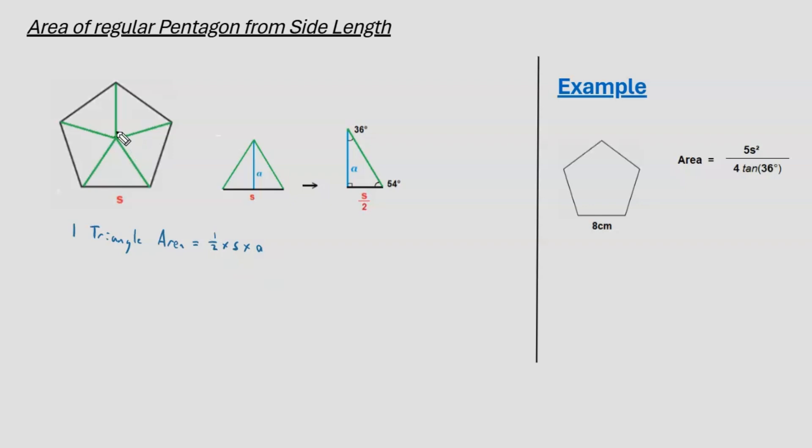Now, as there are five of these triangles of equal size, the pentagon area for the whole regular pentagon is five times this formula. Now, our formula we have shown that can work out the area of a regular pentagon is only in terms of S.